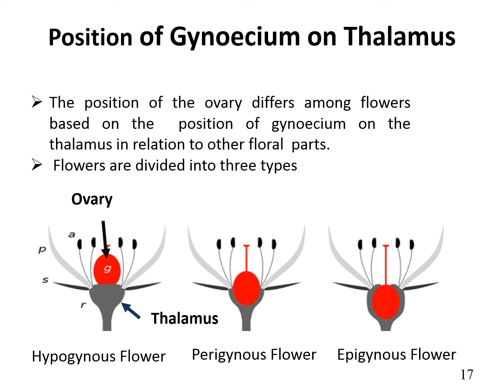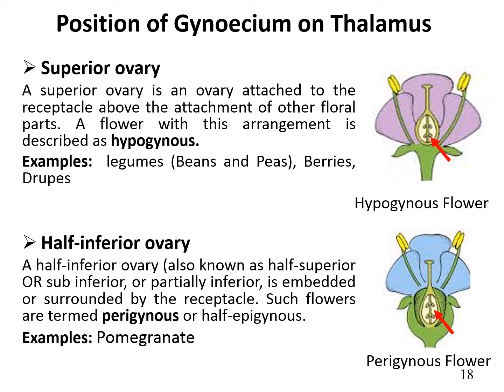Regarding the position of the gynoecium on the thalamus: the position of the ovary differs among flowers based on the position of the gynoecium on the thalamus in relation to the other floral parts. The thalamus is the thickened part of the stem, also called the pedicel, from which the flower organs grow. Flowers are divided into three forms: hypogynous, perigynous, and epigynous. The first type is the superior ovary, also called hypogynous. In this type, the ovary is attached to the receptacle or thalamus above the attachment of the other floral parts. As seen in the picture, the ovary is located above the receptacle. Examples are legumes, beans and peas, berries, and drupes.